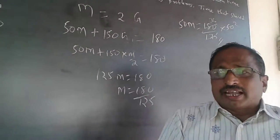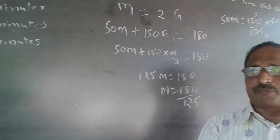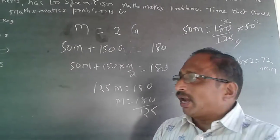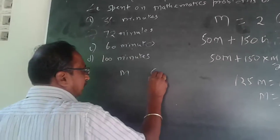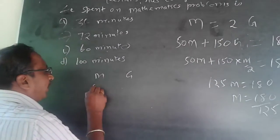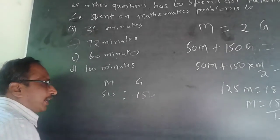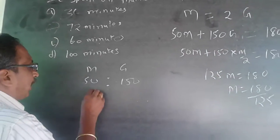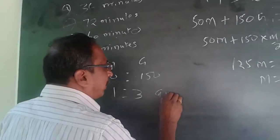As mentioned earlier, this can also be done using a ratio approach. The total math and general questions are 50 and 150, so the ratio is 50:150, which automatically simplifies to 1:3. So question-wise, the ratio is 1:3.